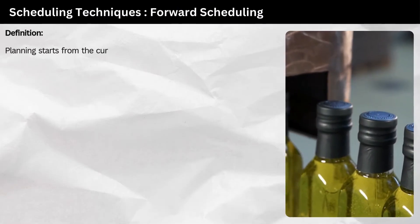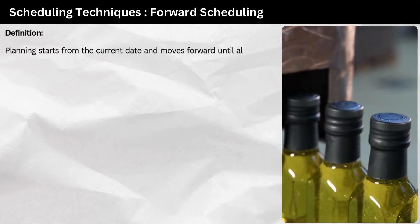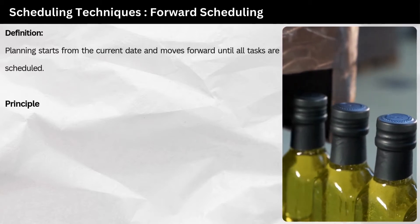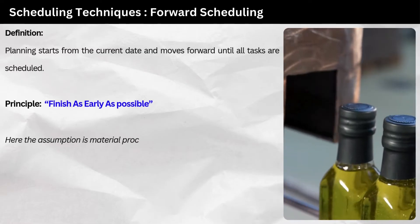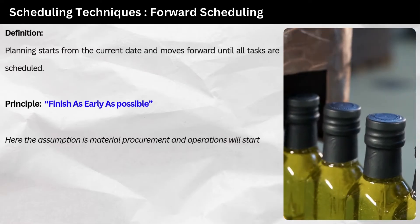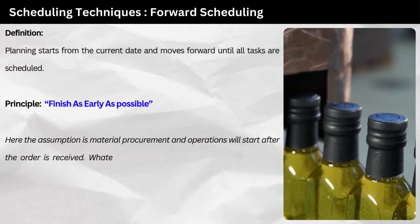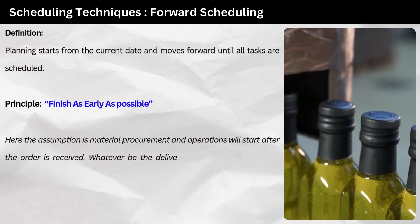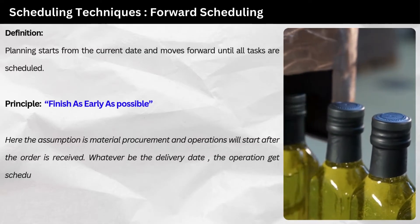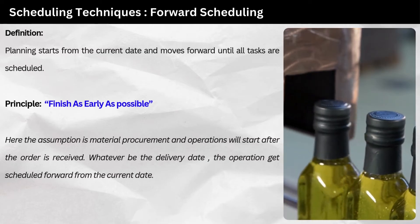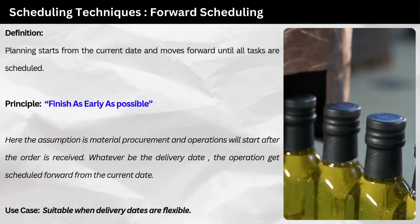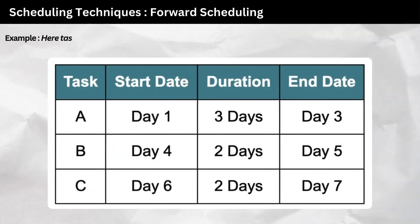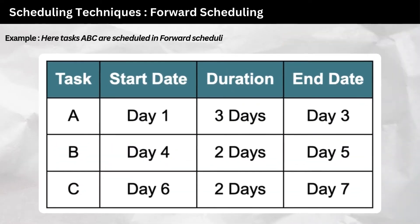Scheduling technique 1: Forward scheduling. Definition — planning starts from the current date and moves forward until all tasks are scheduled. Principle — finish as early as possible. The assumption is that material procurement and operations will start after the order is received, and the operation gets scheduled forward from the current date, whatever the delivery date. Use case — suitable when delivery dates are flexible. Example: tasks A, B, C are scheduled using forward scheduling.